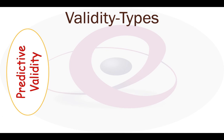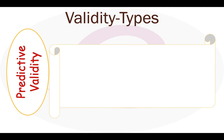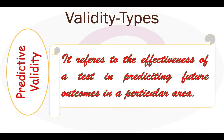Next is predictive validity. The predictive validity of a test refers to its predictive capacity — the effectiveness of a test in predicting future outcomes in a particular area. The word prediction may be used in more than one way: in a broader sense it means prediction from the test to a criterion situation, and in a limited sense it implies prediction over a period of time.